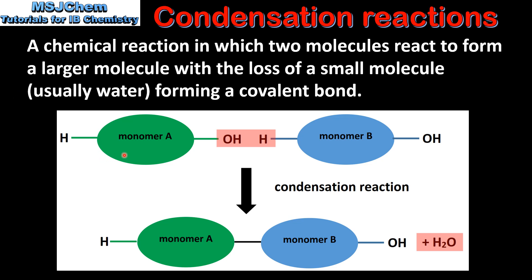Here we have two small molecules, we can call them monomers — monomer A and monomer B. Each molecule possesses two reactive functional groups. The OH on one molecule and the H on another molecule react together to form a molecule of water. The two molecules are then bonded by a covalent bond.